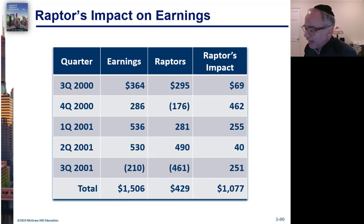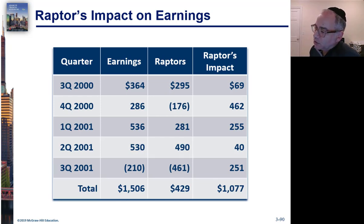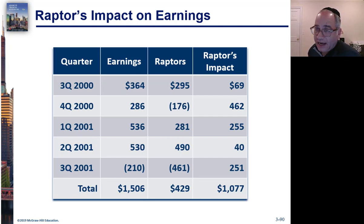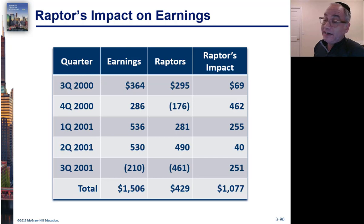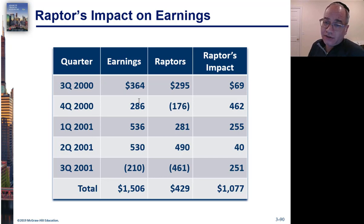Eventually, the Raptors were losing so much money that the bank was calling back its debt. The bank went back to Enron saying they had a guarantee and it was time to pay up. Enron had to pay out the money, and in that case it had to start recording all these losses.